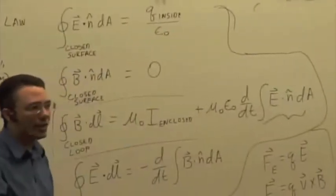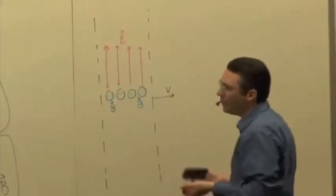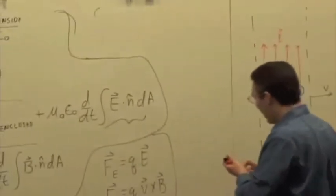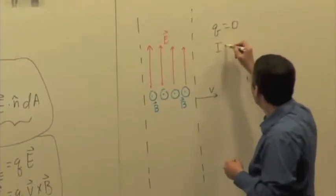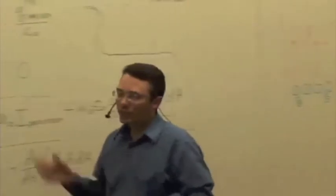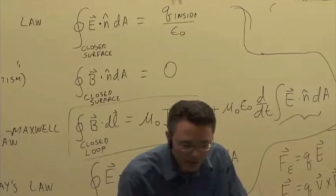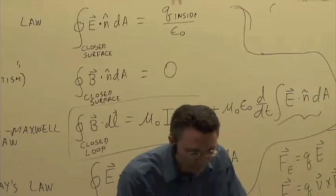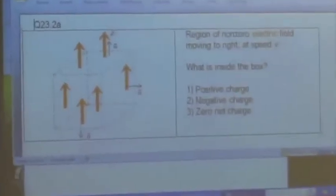We're going to try plugging this pattern into each of the four Maxwell's equations and seeing what we get. We already know that if we don't have any electric and magnetic fields around, the charge everywhere is going to be zero, and there are no currents — I equals zero. So let's start by plugging this region of field into Gauss's Law, the first of Maxwell's equations. Here's our region of non-zero electric field, everywhere pointing in the positive Y direction, and I imagine a box that is inside this region.